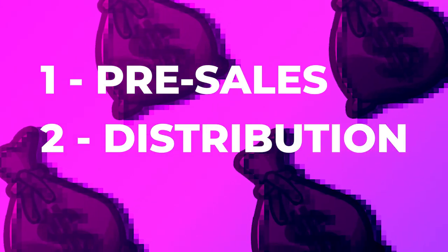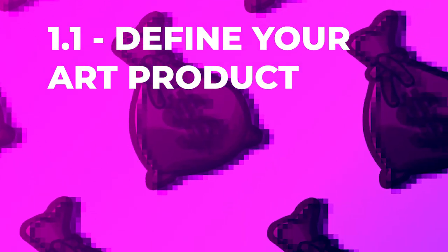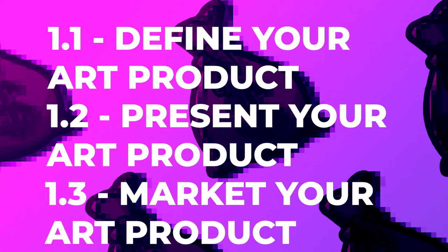We'll divide this into three sections: pre-sale, distribution, and post-sales. We're going to start with the foundations. If you want to build an online art empire, the first place to start is at the foundations, to have a stable footing to build upon. We're going to cover defining and organizing your art product, how to present your art product, and how to market and distribute it. Even if you have some experience selling art online, it's always worth revisiting your foundations.